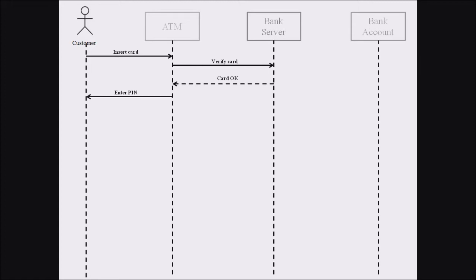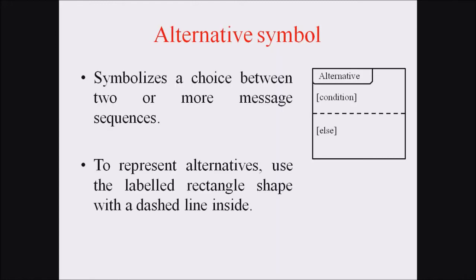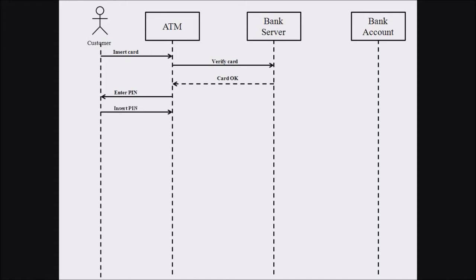The next communication is the ATM asking the customer to enter the ATM pin. Before that, we introduce the alternative symbol, which represents a choice between two message sequences. It uses a labeled rectangle with a dashed line inside — the top field represents a condition and the bottom field represents the else condition. For pin entry, the two options are: the customer enters a correct pin or a wrong pin.